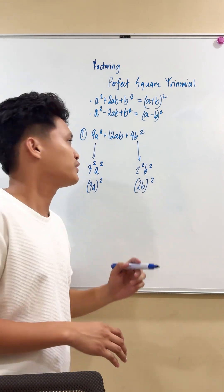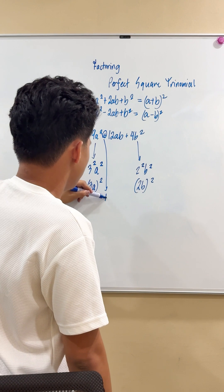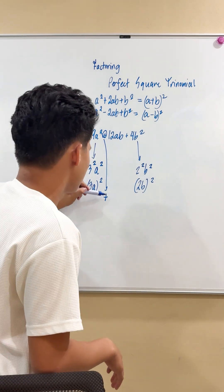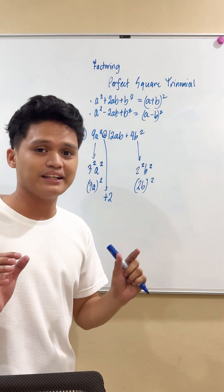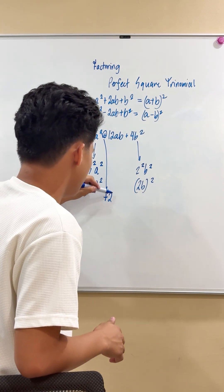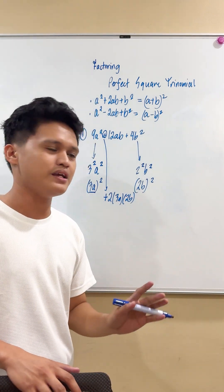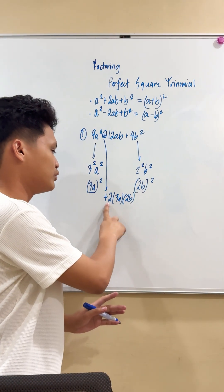What about for the middle term? We need to extract this middle sign, which is positive. And then there's this constant 2. Next, you need to write out the first term and the last term that you obtained earlier, which is 3a and then 2b.